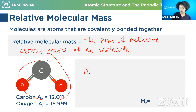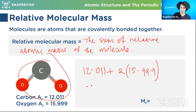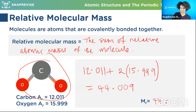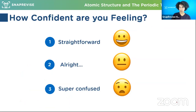In your exam, if they give you values to three decimal places you've got to use the numbers they give you. So we're doing 12.011 plus two times the oxygen mass. What is 12.011 + (2 × 15.999)? We get 44.009. All of you that just put 44 - don't do that in your exam. If they give you multiple decimal places, you must use multiple decimal places. That's really important.